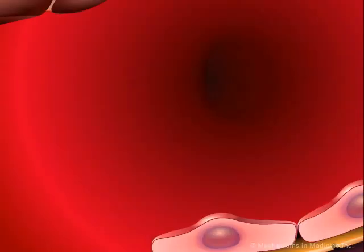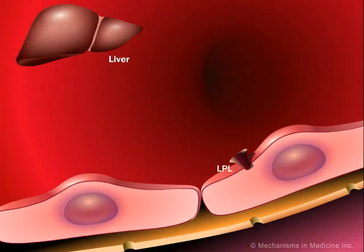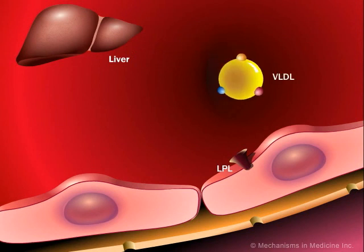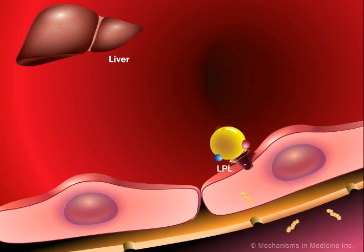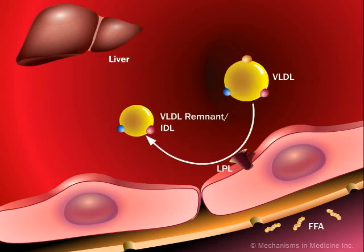In diabetes, there is abnormal lipoprotein metabolism. Very low-density lipoproteins, VLDL, are secreted from the liver into the blood circulation. These VLDL molecules are then transported to the capillaries of peripheral tissues, where they are exposed to an enzyme called lipoprotein lipase.